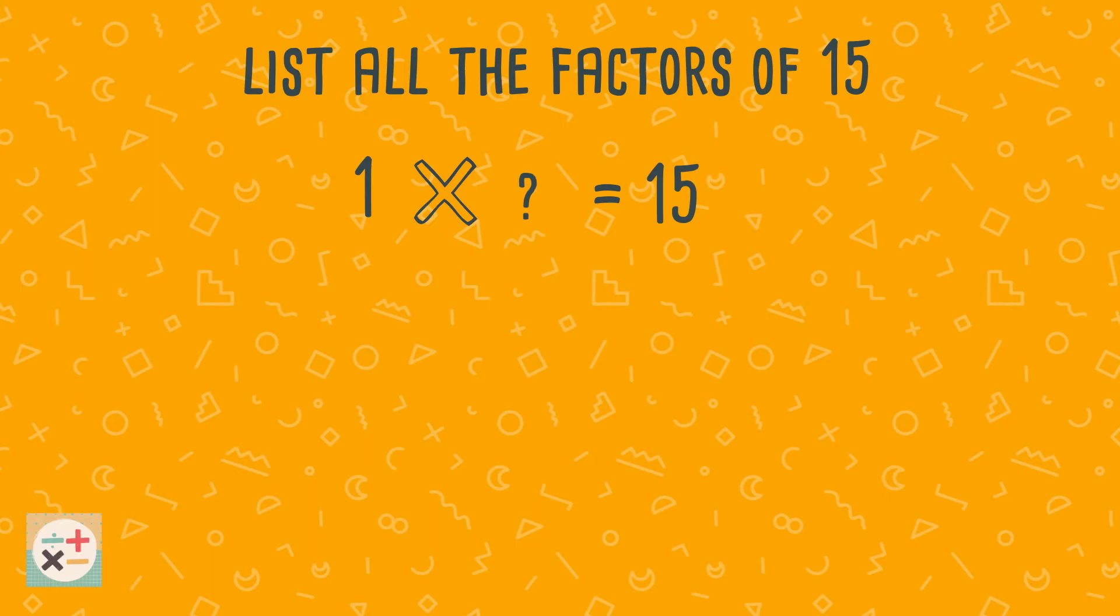Let's have a look at another example. In this example, some of the numbers do not divide into 15 exactly, such as the number 2. In this case, we can just cross them out as they are not factors of 15.